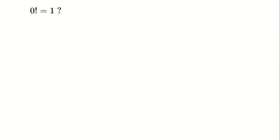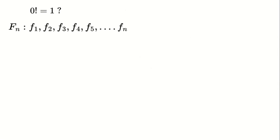The answer lies in understanding the sequence of factorials. Factorials are fundamentally a sequence where each term is the product of the first n natural numbers. For example, the first term is the product of one natural number, the second term is the product of two natural numbers, and so on.